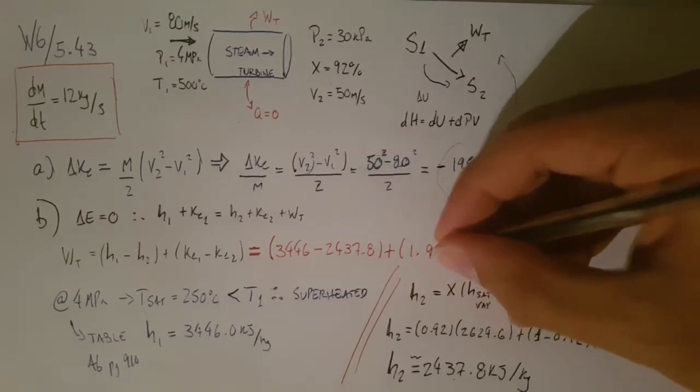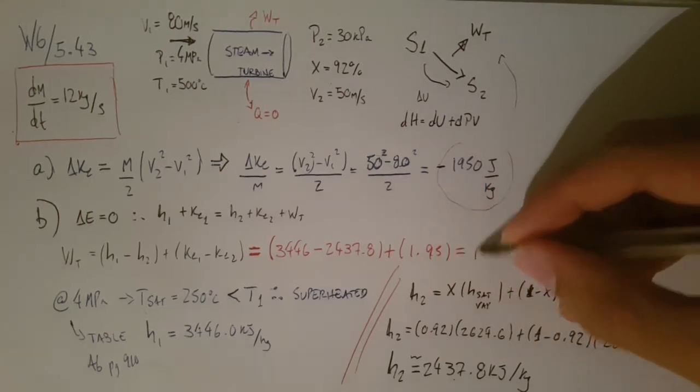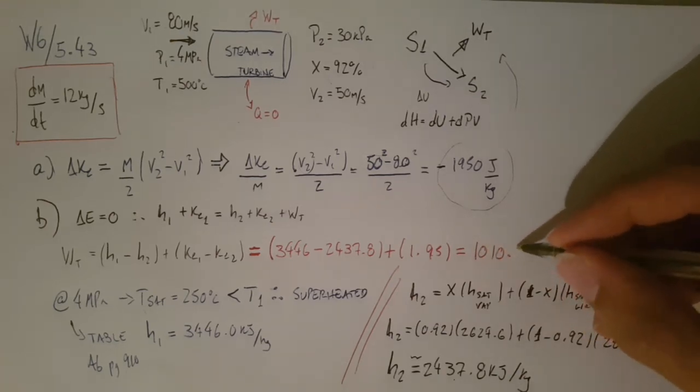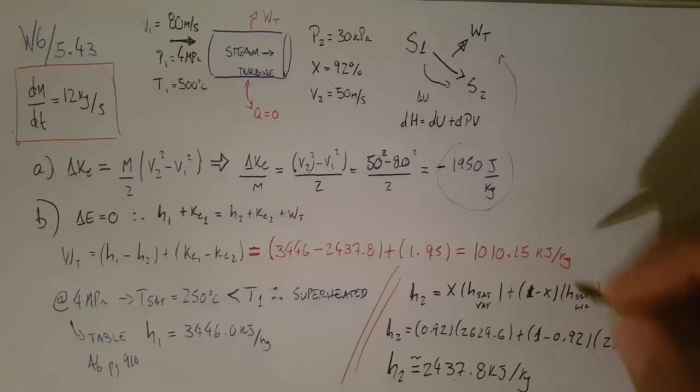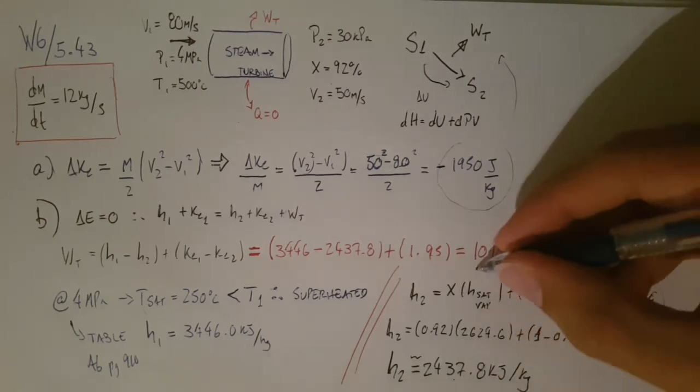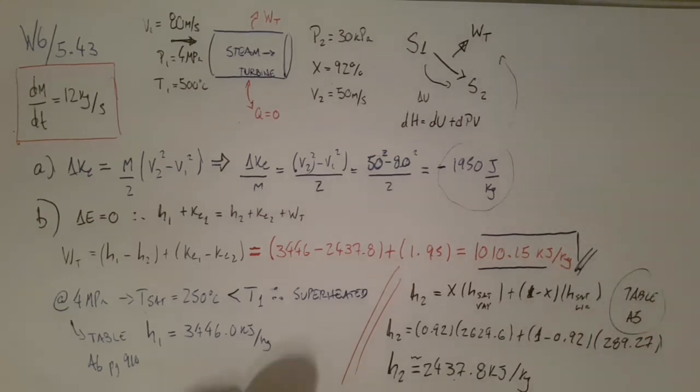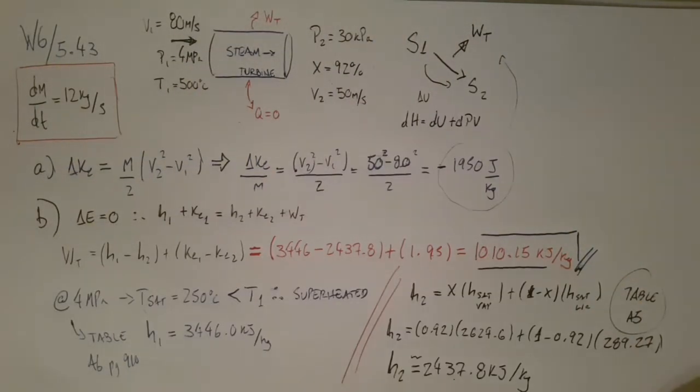So this whole thing is 1010.15, and that's kilojoules per kilogram. So the same unit as the enthalpies we just found. So this is our answer for B. That's how much energy the turbine has in the form of work that can be used. All right? And we have that energy due to the change in kinetic energy and the change in the state properties. Okay? So I'm going to pause and change pages for us to do part C.